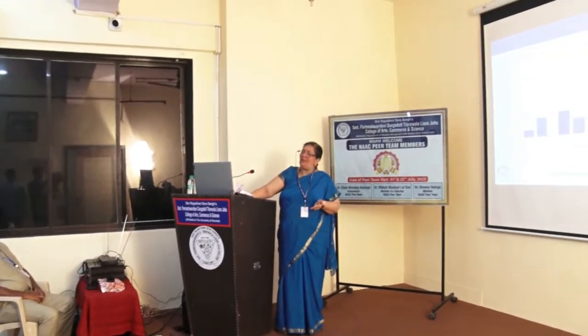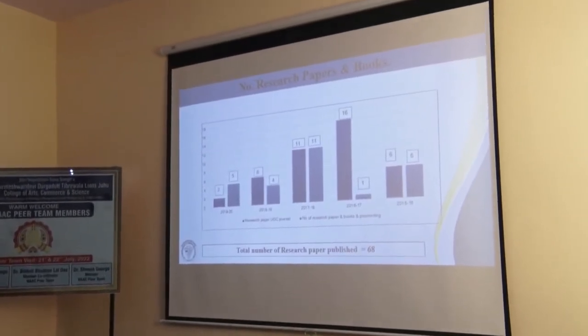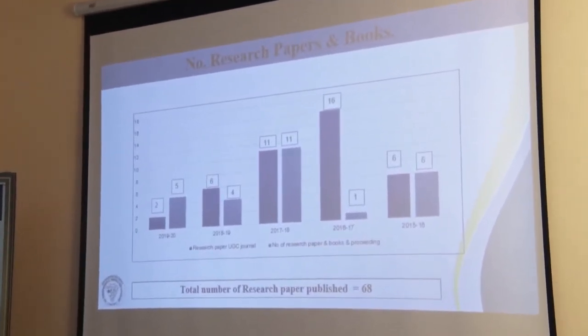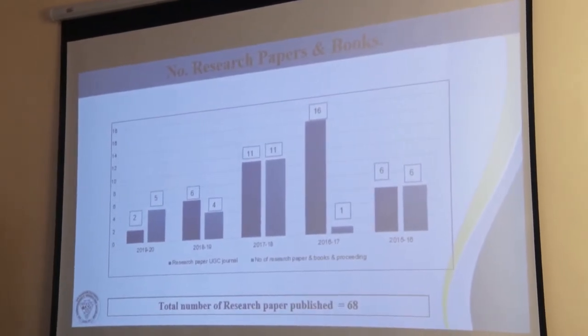The number of research papers presented by our teachers is shown in a graph. From 2015–16 onwards, in 2019–20 one bar represents research papers in UGC journals and another bar represents conference proceedings. Because in the latest rule, UGC care list inclusion is required, we have now started promoting publications in UGC-listed journals, whereas earlier we were focused only on conference proceedings.